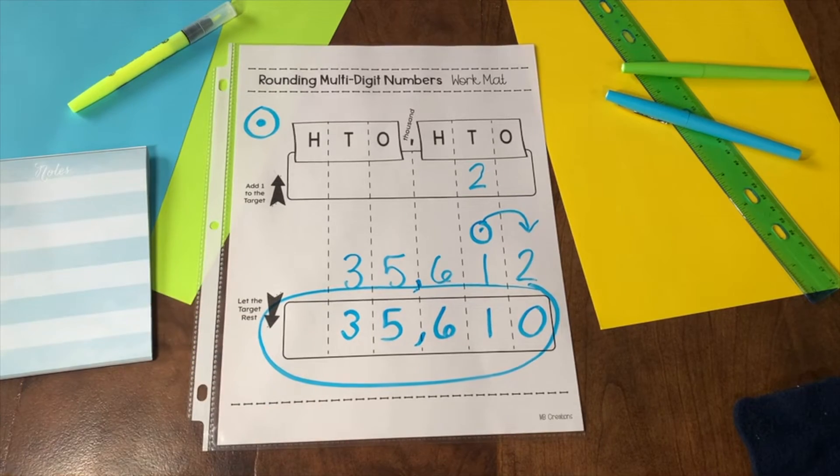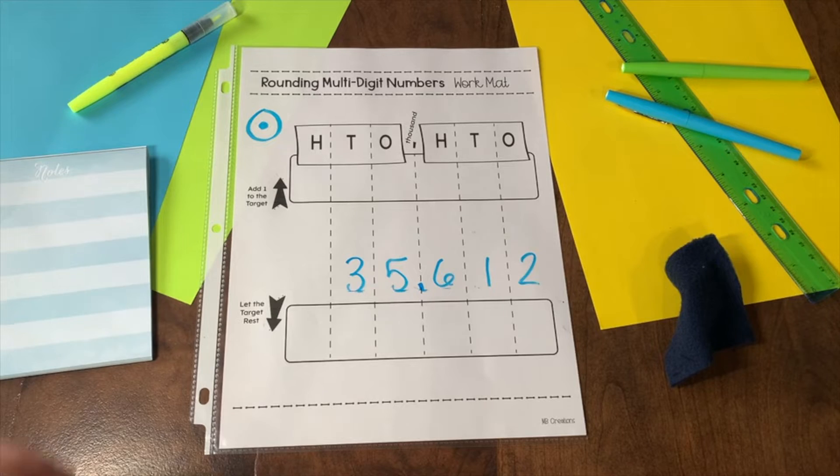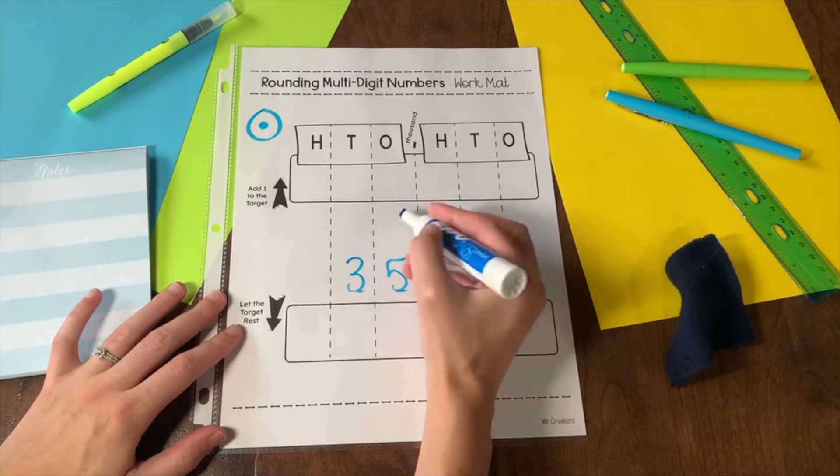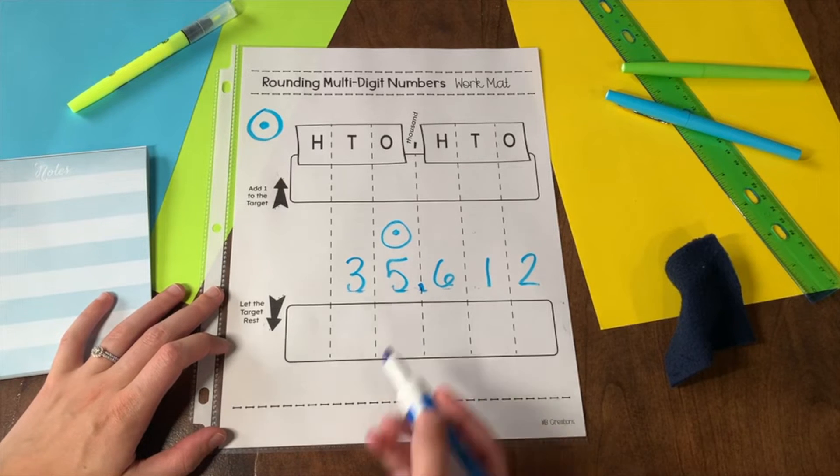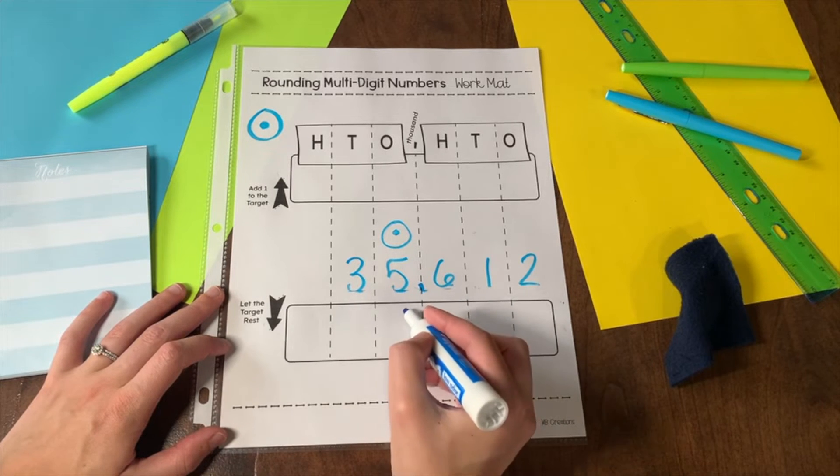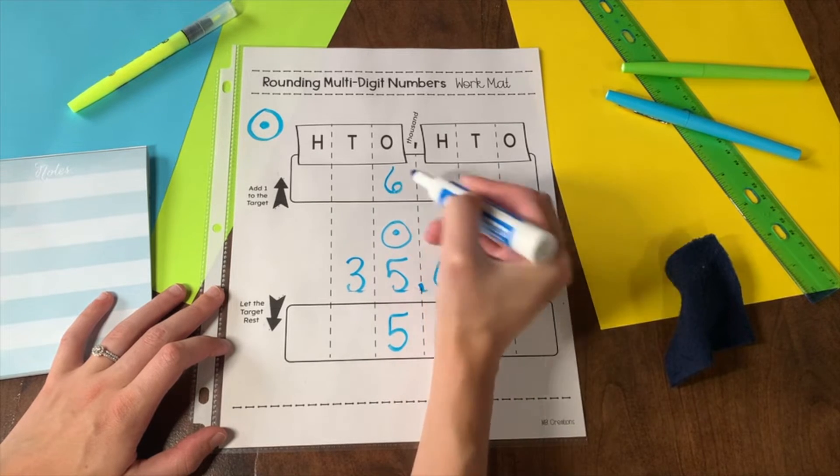Now I'll change my target. Instead of rounding to the tens place, now I'll round to the thousands place. This is my target. The 5 in the thousands place will either stay as a 5 or it will increase by 1, making it a 6.